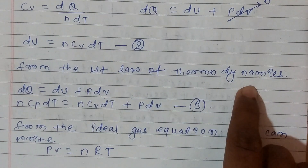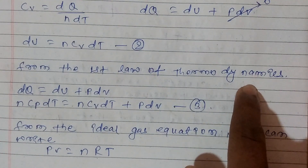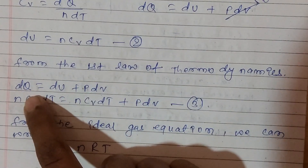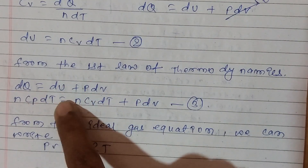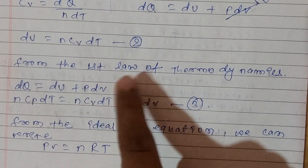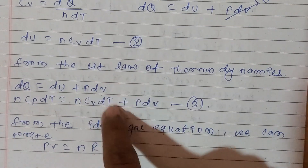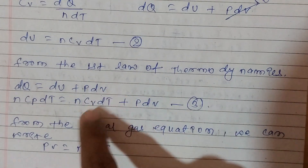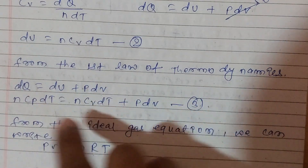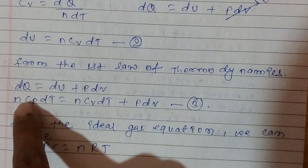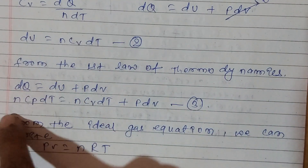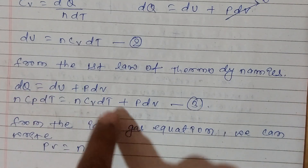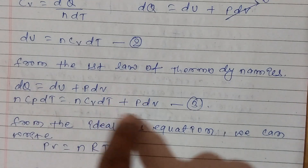Now, from the first law of thermodynamics: DQ is equal to DU plus P dV, meaning DQ equals DU plus DW, where DW equals P dV. Substituting our relations: N CP DT equals N CV DT plus P dV.